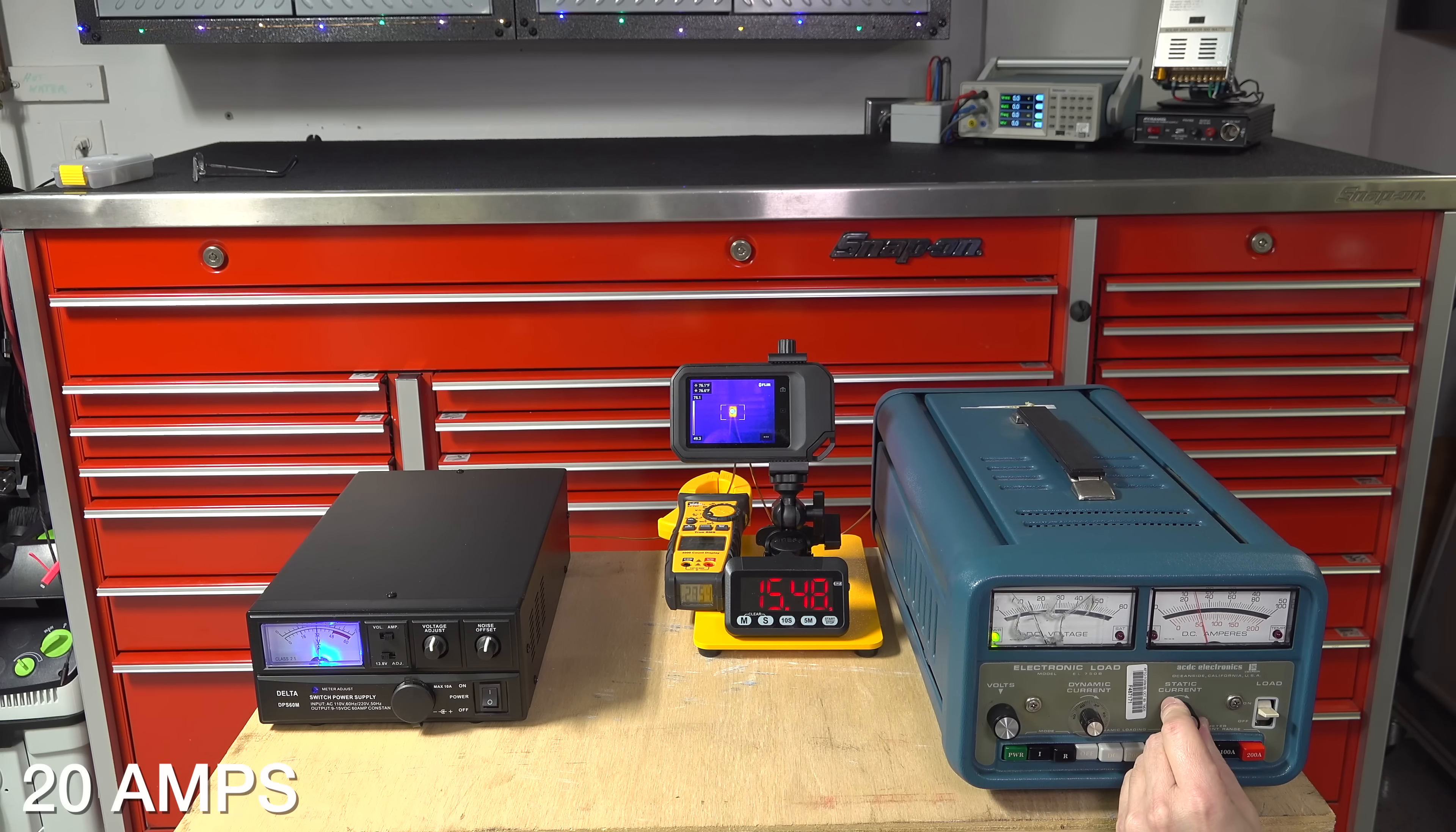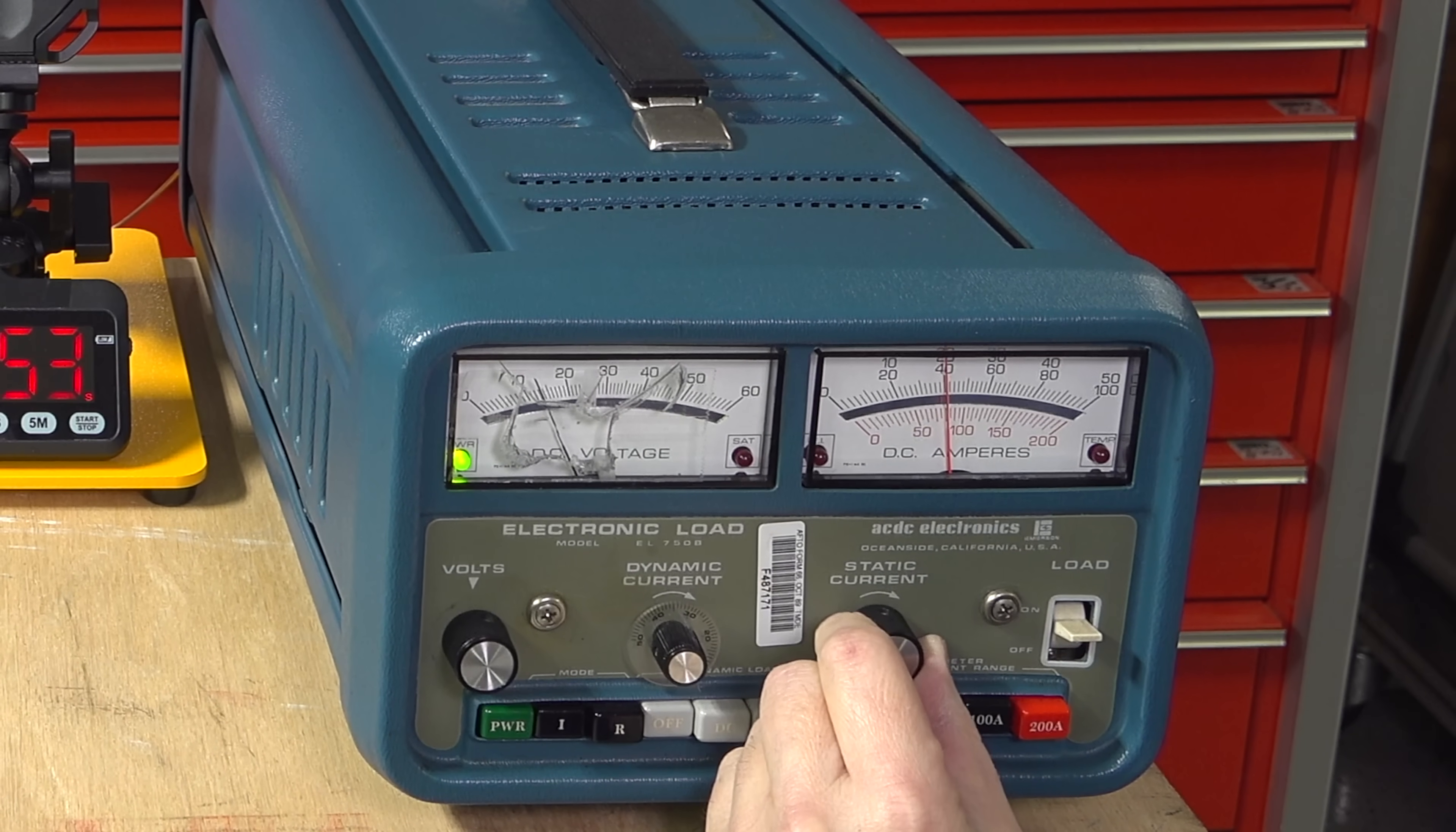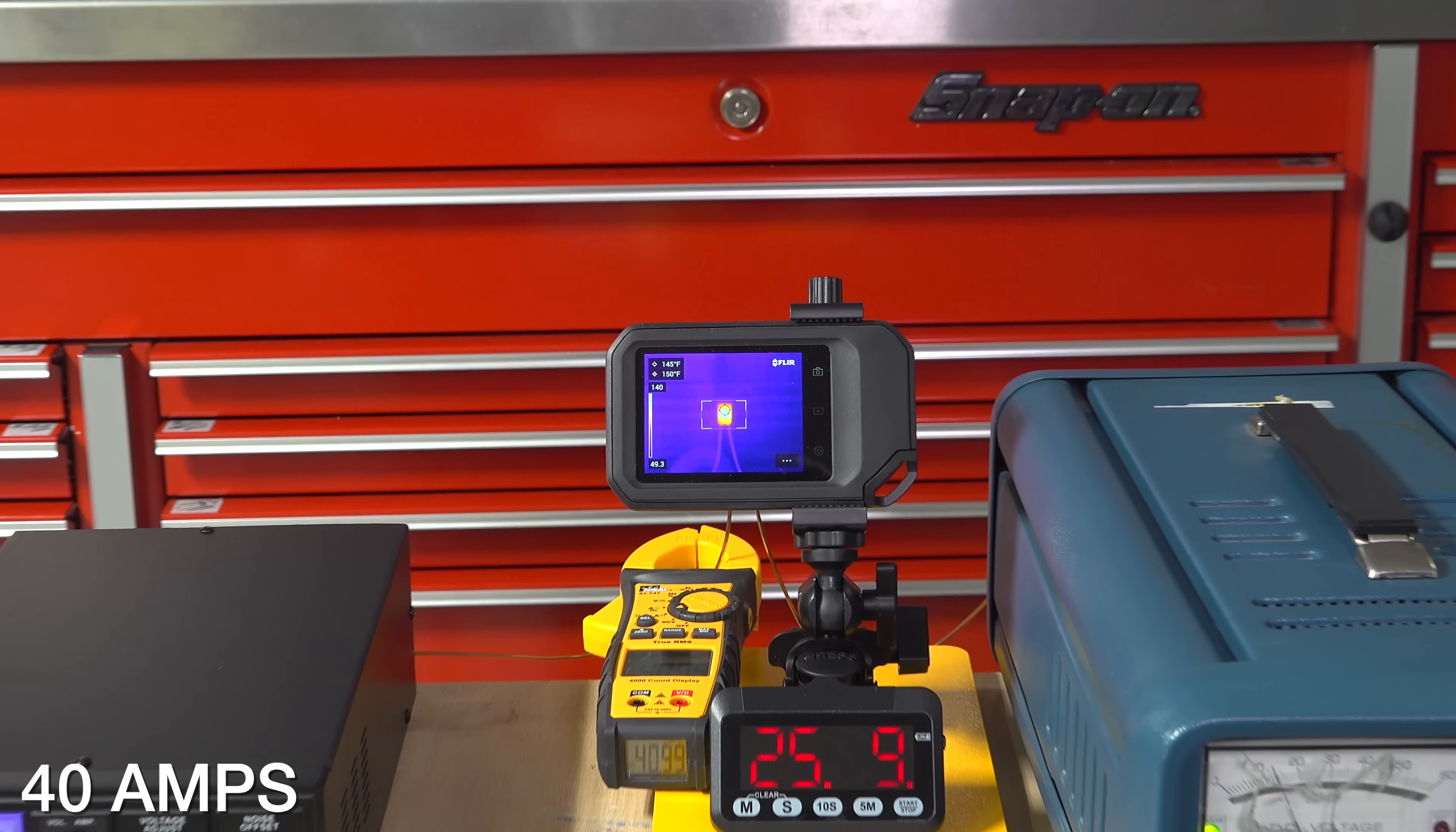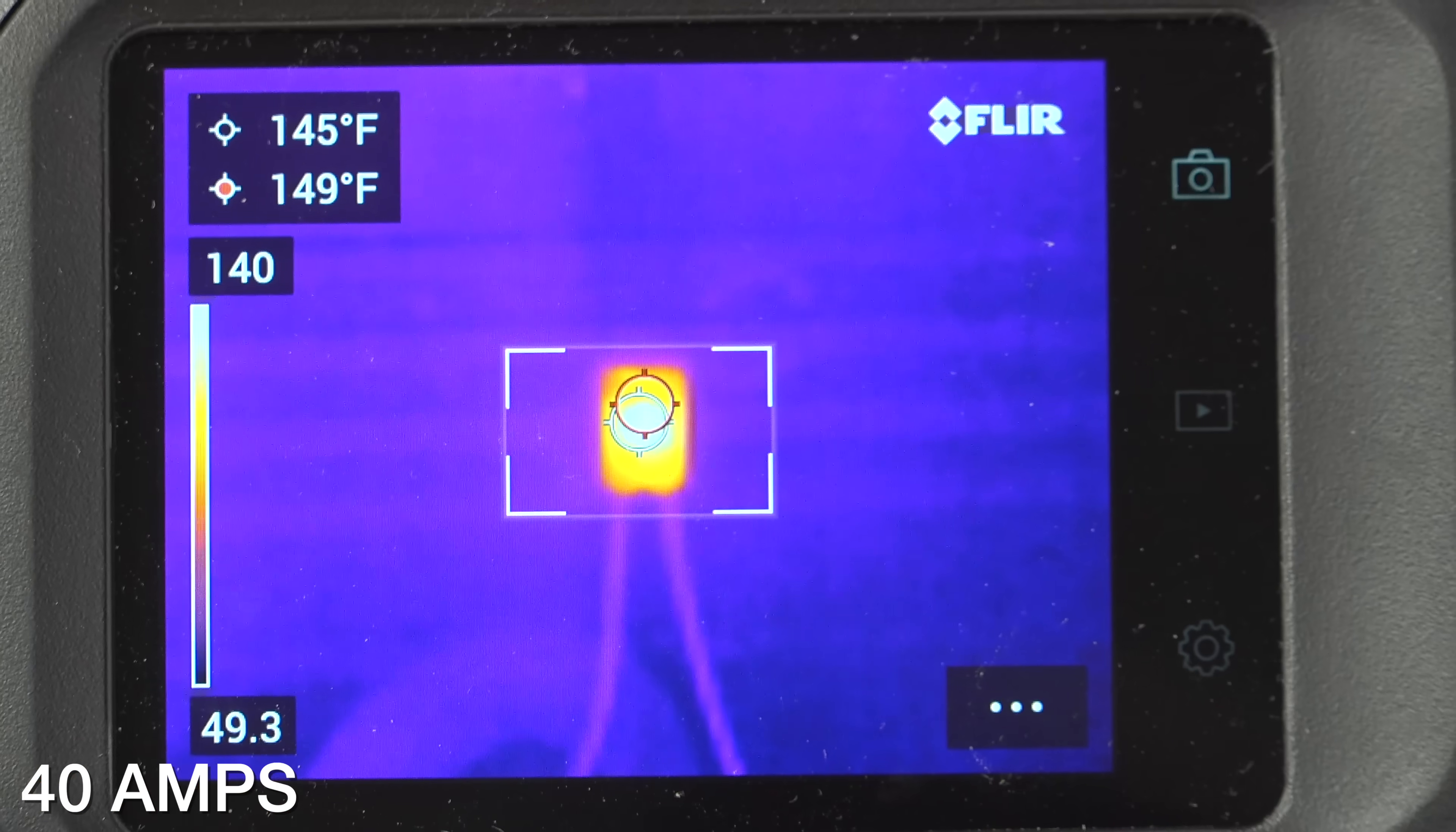Now I wanted to overload the connector so I doubled the amperage to 40 amps. Now that is two times the amount that this connector is actually rated for. Now we're at 40 amps for 10 minutes. The connector is definitely getting hotter. It's about 150 degrees.